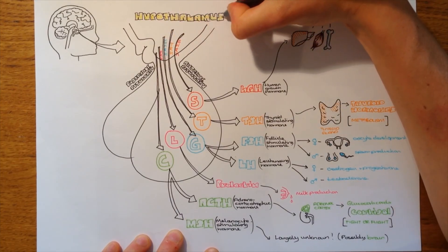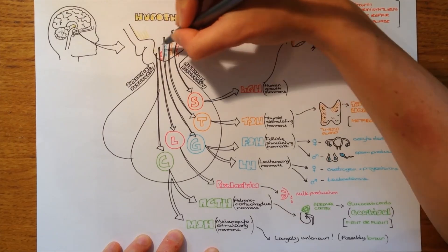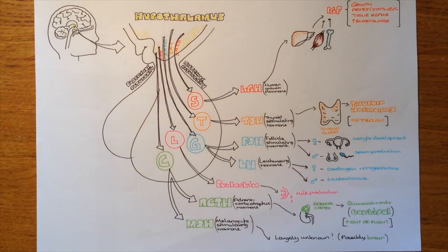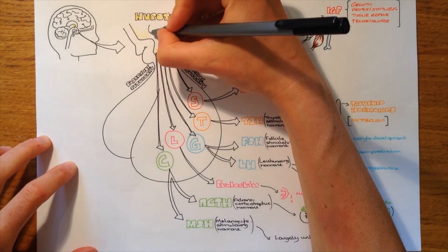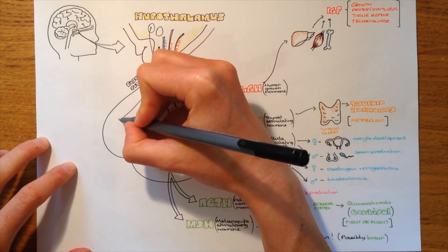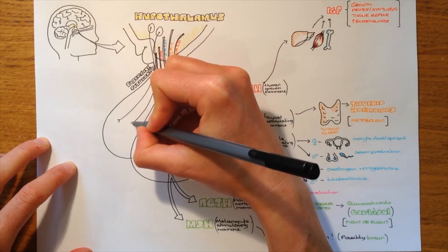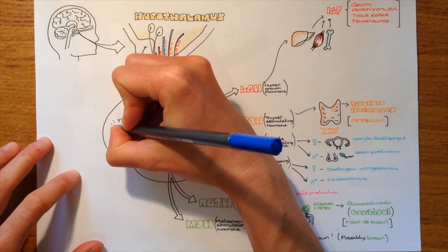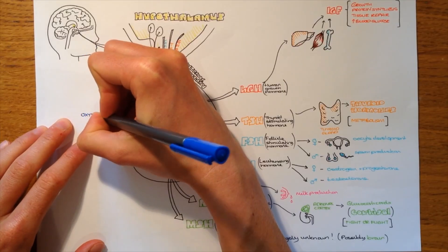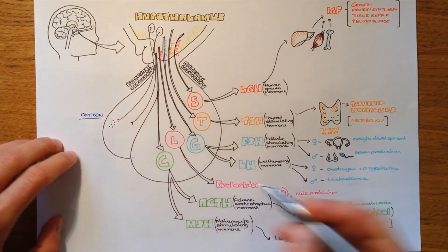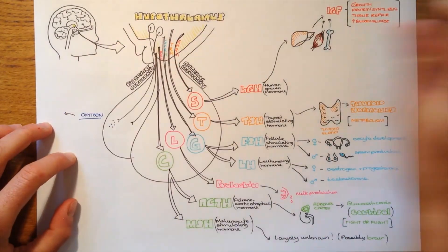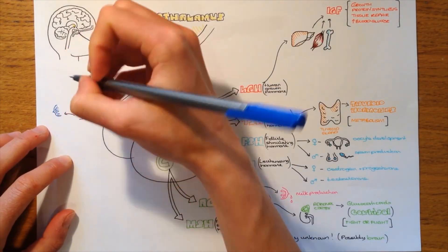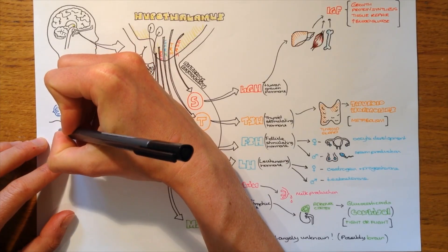So, the posterior pituitary is different, as I said. It's known as the neurohypophysis, because hormones aren't produced there. They're actually produced in the hypothalamus, in these neurosecretory cells, which extend through the stalk, or the infundibulum if we're going to be technical, into the posterior pituitary, where they are released by exocytosis, just like in a normal axon terminal.